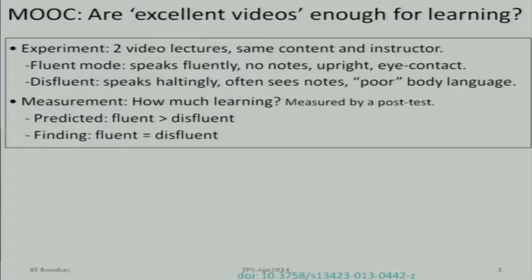I will talk about one experiment. Two video lectures were created with all the correct things — correct duration, proper topic. The same content was used, but in one case the instructor spoke fluently, made eye contact with the audience, didn't refer to notes; and in the other case the instructor spoke very haltingly, kept looking down, kept hesitating. So what do we expect? In which video will more learning happen? The first one, right?